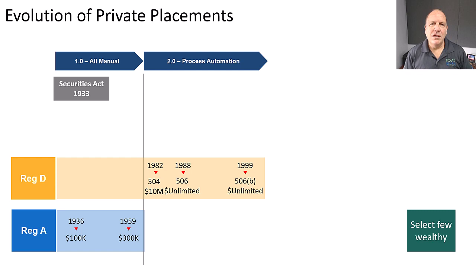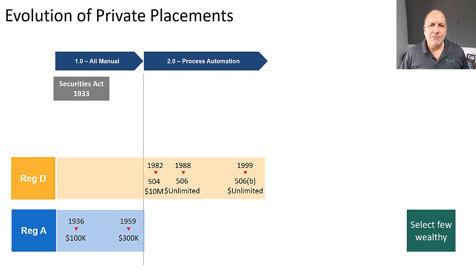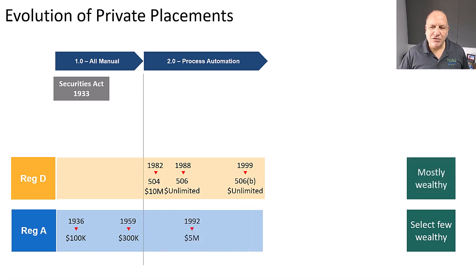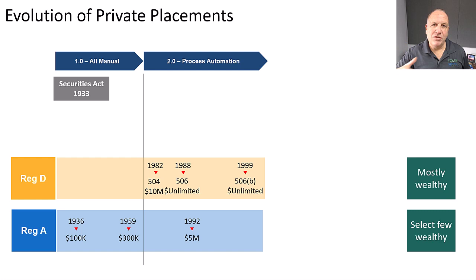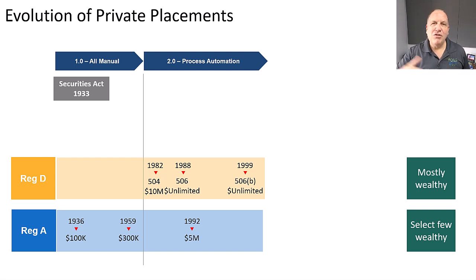The second thing that happened was Congress created a new exemption called Reg D. The first Reg D's came out in 1982. As you can see here, there are several different types. They also enhanced Reg A, and one of the greatest enhancements was that it can now raise up to $5 million under Reg A. Computer networks took the place of people shouting at each other on the stock market floor, but also automated the process of raising capital. We call that Private Placements 2.0.